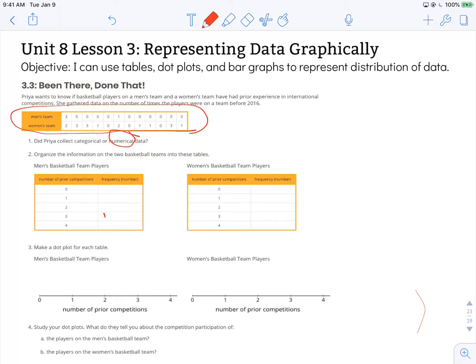So on the men's team we have a three, and then we have four zeros in a row. A one. And then we have six more zeros.